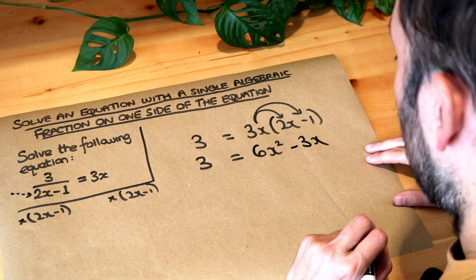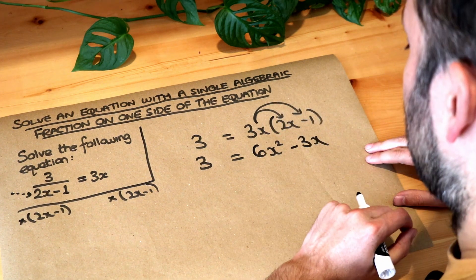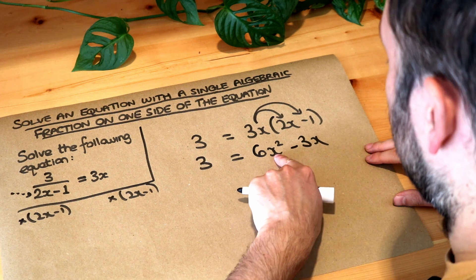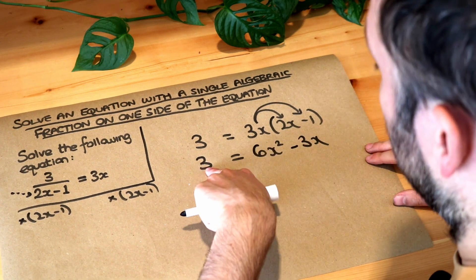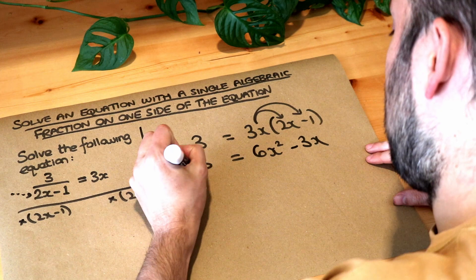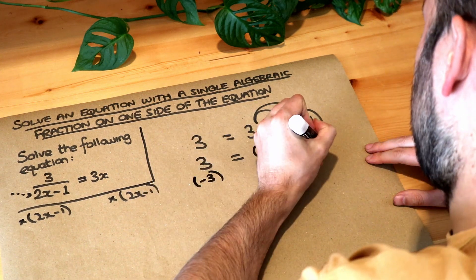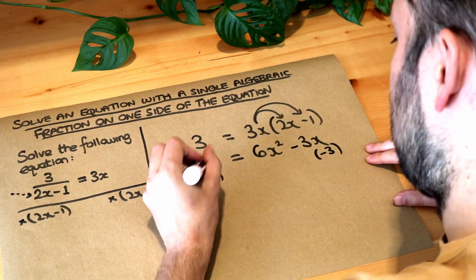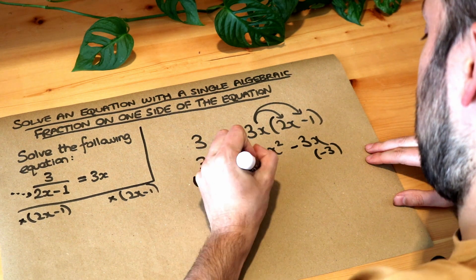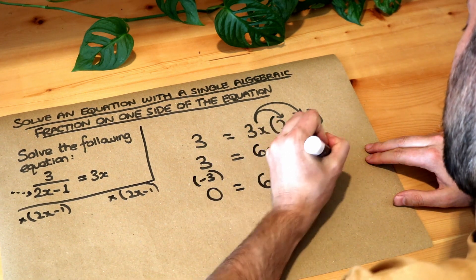So we've now got this equation. Remember, to solve a quadratic equation, we should get everything on the side where the x squared term is positive and 0 on the other side. So we're just going to minus 3 so we have 0 on one side of the equation. So that then becomes 0 and we get 6x squared minus 3x minus 3.